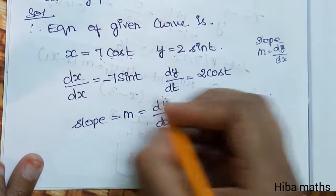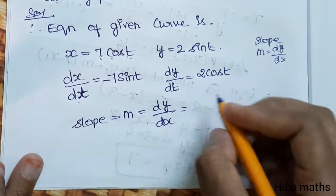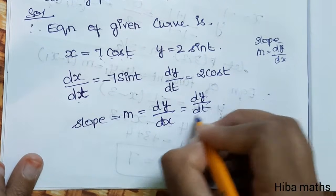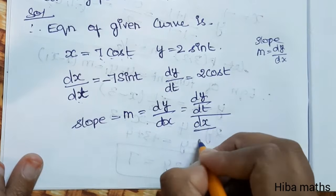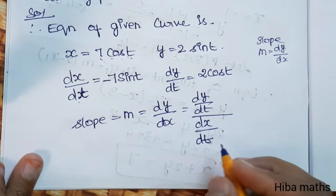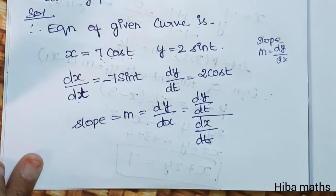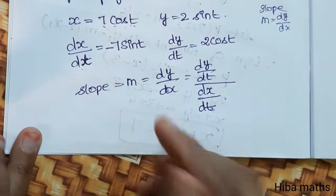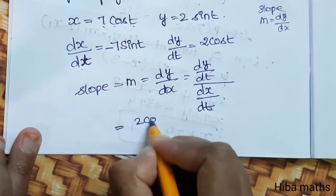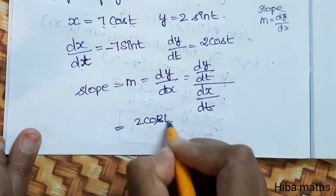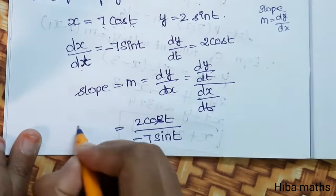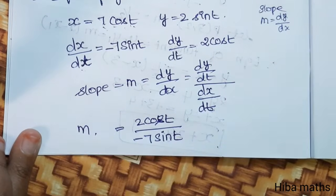What we do is divide dy by dt by dx by dt — the dt cancels. So dy by dx equals 2 cos t divided by minus sin t. This is the slope.